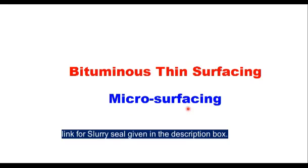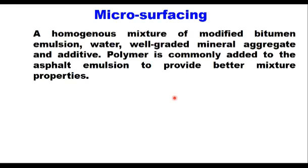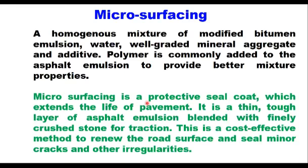Microsurfacing is a homogeneous mixture of modified bitumen emulsion, water, well-graded mineral aggregates, and additive. Polymer is commonly added to the asphalt emulsion to provide better mixture properties. Microsurfacing is a protective seal coat which extends the life of pavement. It is a thin, tough layer of asphalt emulsion blended with finely crushed stone for traction.